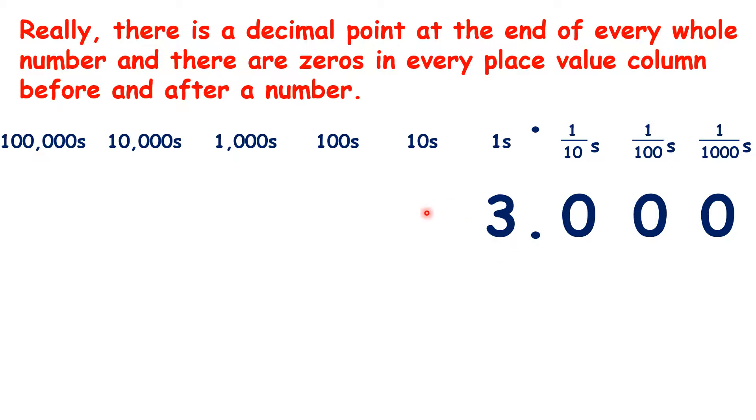And we could also put zeros in our place value columns to the left. So if we just have the number 3, we have no tens, no hundreds, no thousands, no ten thousands, no hundred thousands, and these zeros could go on forever in both directions.